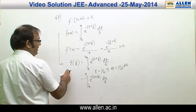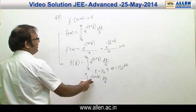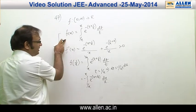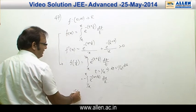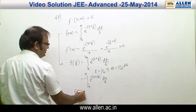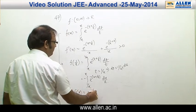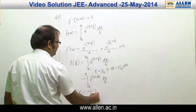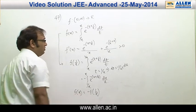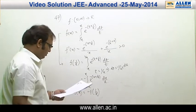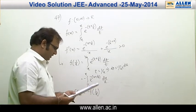Looking at f(1/x)'s expression and f(x)'s expression, we can clearly say that f(x) = −f(1/x). Therefore their sum is 0, and hence option C is correct.